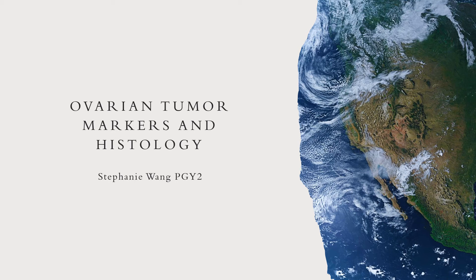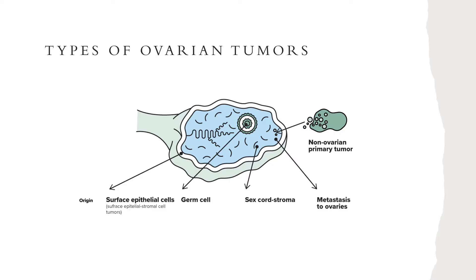Today we're going to be talking about ovarian tumor markers as well as common histological slide findings and buzzwords that you can see on USMLE. You can have your surface epithelial cells, your germ cells, as well as your sex cord stromal cell tumors. Other things would be your non-ovarian primary tumors that present as metastatic disease to the ovaries, but we will not be focusing on that today.